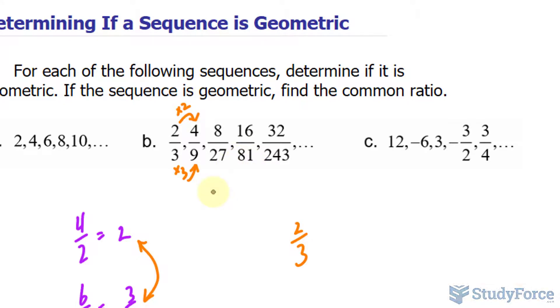Finally, in this last example, it goes from 12 to negative 6 to positive 3 to negative 3 over 2 and so on. How do we go from 12 to negative 6?